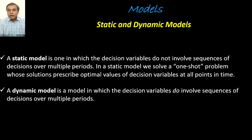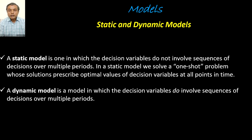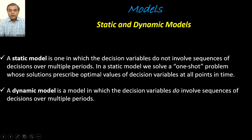Next is static and dynamic models. A static model is one in which decision variables do not involve a sequence of decisions over multiple periods — we solve a one-shot problem whose solution prescribes optimal values of decision variables at all points in time. Static models do not vary with time; once a decision is taken, it applies for a longer duration. A dynamic model involves a sequence of decisions over multiple periods and changes with time.